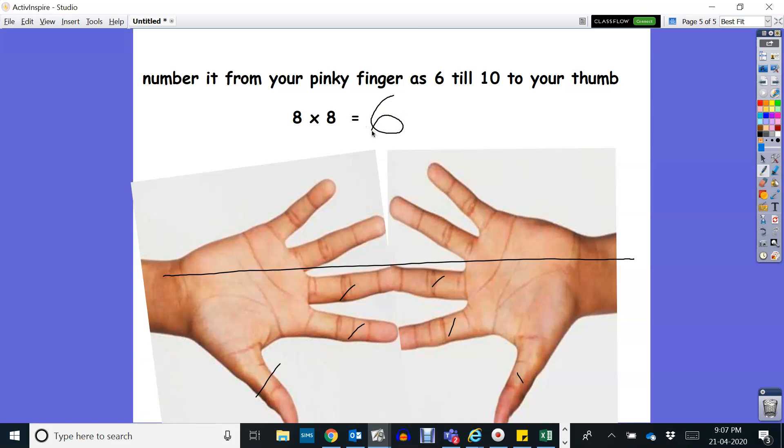And there are 2 and 2 on the top. So 2 times 2 is 4. Now the answer is 64.